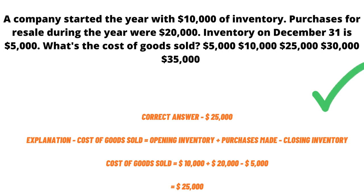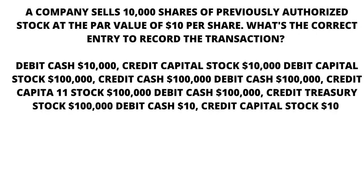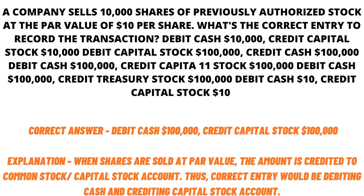Now we have another question to discuss. A company sells 10,000 shares of previously authorized stock at a par value of $10 per share. What's the correct entry to record this? There is data given below, such as debit cash $10,000, credit capital $10,000, and so on.